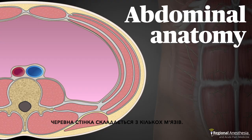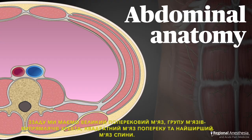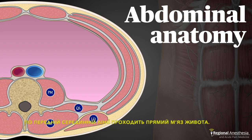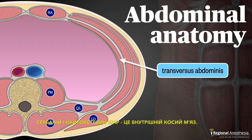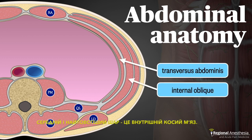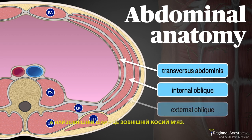The abdominal wall is made up of several muscles. Posteriorly, we have the psoas major, the erector spinae group, the quadratus lumborum, and latissimus dorsi. Running down the anterior midline is the rectus abdominis muscle. The lateral wall of the abdomen consists of three stacked muscles and fascia layers: the innermost is the transversus abdominis, the middle and thickest layer is the internal oblique, and the outermost is the external oblique muscle.